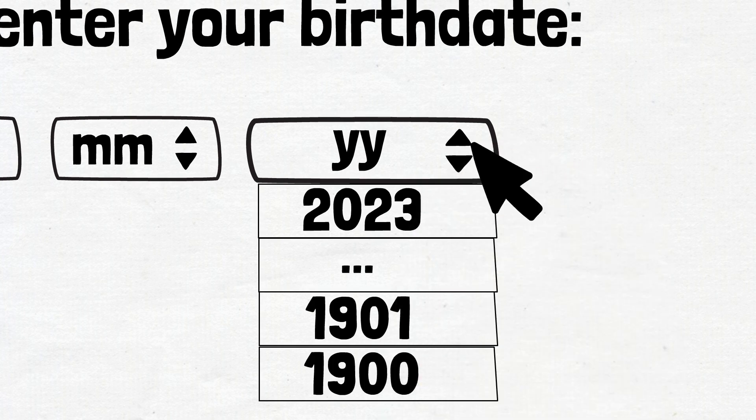So, if we expand the year dropdown, we can see that the newest year we can select is 2023. And the latest year is 1900. These are our min and max values. And we can put those on our age line.